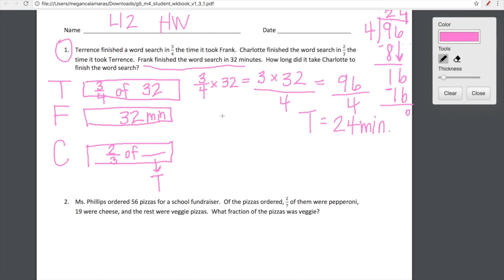Now we need to figure out our final question is how long did it take Charlotte to finish the word search? Charlotte's amount of time is dependent on Terrence's amount of time. We're given that Charlotte finished the word search in two thirds the time it took Terrence. So two thirds of Terrence. Terrence is 24 minutes. So now we'll be able to figure out Charlotte. Two thirds of 24 looks like two thirds times 24 in an expression. So let's go ahead and evaluate. So we have two times 24 on the top and that is over three.